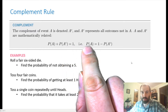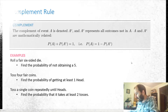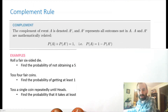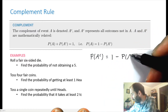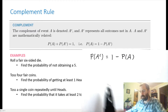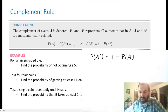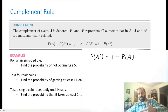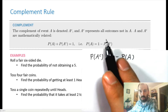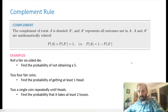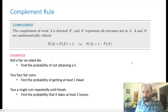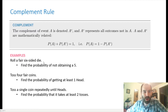Using algebra, we can flip that relationship: the probability of an event equals one minus the probability of its complement, and equivalently, the probability of the complement equals one minus the probability of the event. This is useful because sometimes it's easier to compute the probability of the opposite of an event. If you're having trouble computing a probability, try computing its complement and then subtract from one.